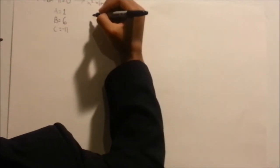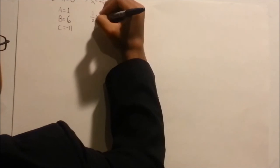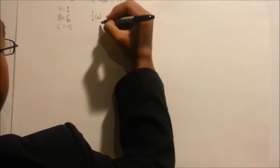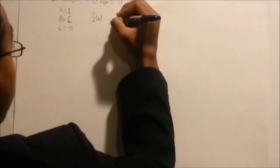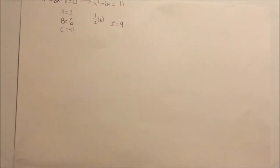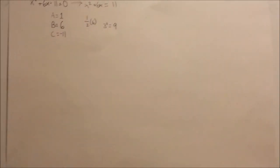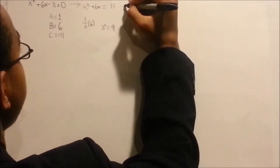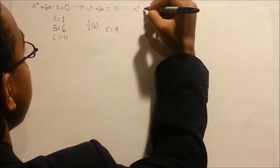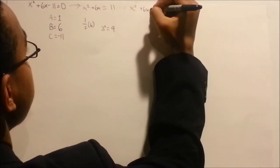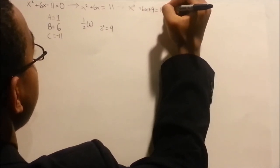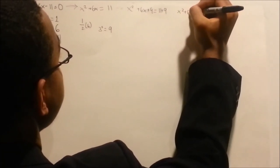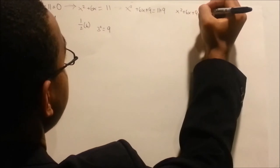You would take one half of b, which is 6, and squared. One half of 6 is 3, squared equals 9. You would add one half of b, which is 9, to both sides of the equation, making the equation x squared plus 6x plus 9 equals 11 plus 9, or x squared plus 6x plus 9 equals 20.